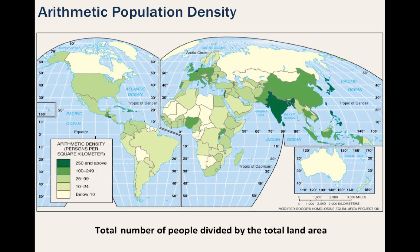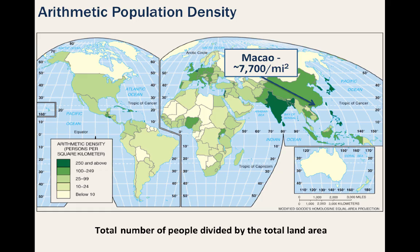This is based on a simple formula and, of course, our world is one of extremes. Macau, a special administrative region of China, is a semi-autonomous territory and boasts the highest arithmetic population density of any place on Earth with approximately 7,700 people per square mile. And then there's Greenland with approximately 0.01 people per square mile.